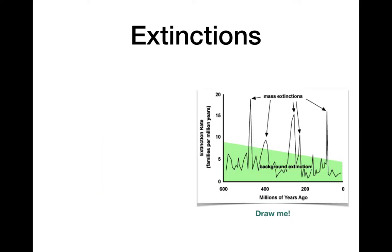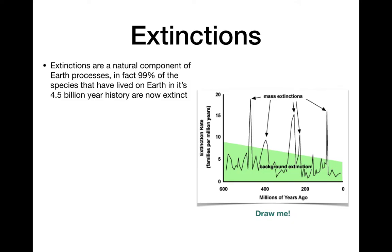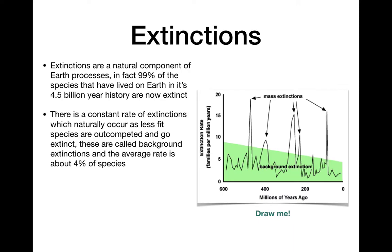Extinctions are natural, normal, and part of Earth's history. Earth is about 4.5 billion years old, and 99% of species that have ever lived are now extinct — only 1% are still extant. There is a normal, constant rate of extinction called the background extinction rate, which occurs when species are outcompeted or less well adapted. On average, about 4% of species go extinct at any one time, while the other 96% survive and continue to compete.